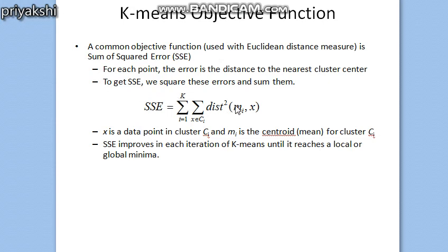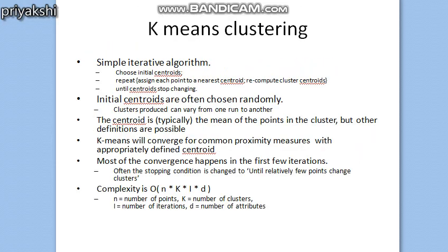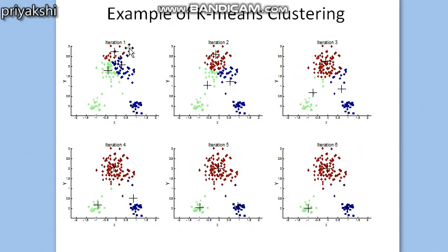In the case of the K-means clustering algorithm, if you have two different versions or runs, you will prefer the clustering in which SSE is minimum. Generally, SSE improves in each iteration of K-means until it reaches a local or global minima. Considering a previous example: in the first iteration SSE will be largest, then it will decrease in the second, third, and fourth iterations, continuing to decrease in the fifth iteration, and stopping in the sixth iteration because it has found the local or global minima.